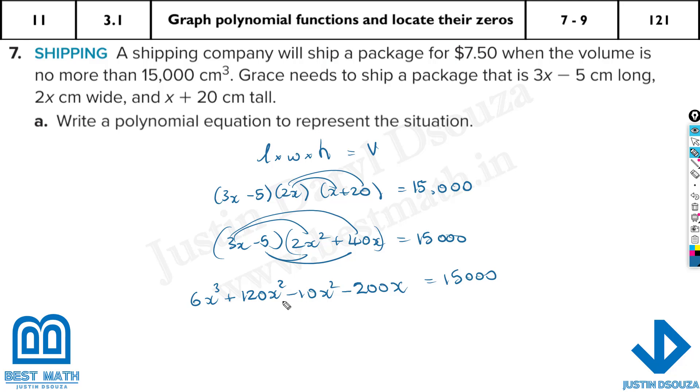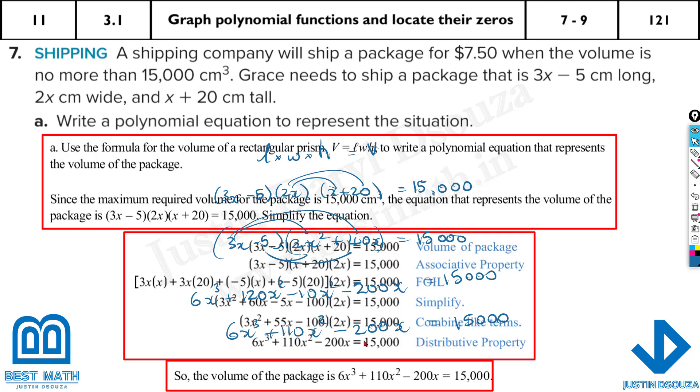Now we will simplify. The highest degree first is 6x³. Now what about x²? There are two terms, that's plus 110x², and then we have minus 200x. That is equal to 15,000. So 6x³ + 110x² - 200x = 15,000, just by multiplying all three terms.